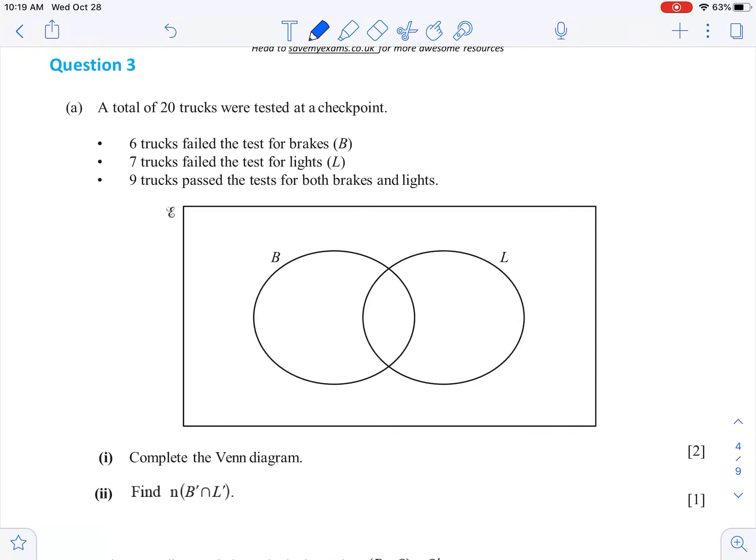All right, let's have a look at this question. So we've got 20 trucks tested at a checkpoint. 6 trucks failed the test for brakes, 7 trucks failed the test for lights, and 9 trucks passed the tests for both brakes and lights.